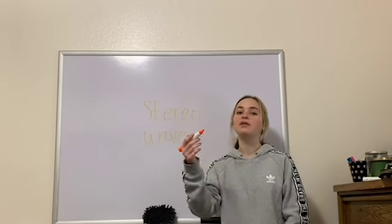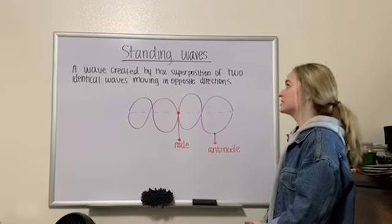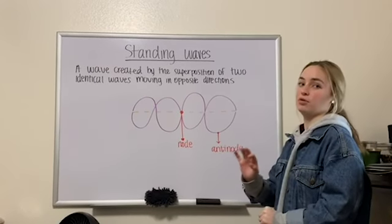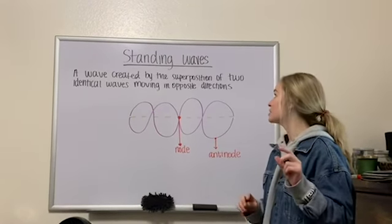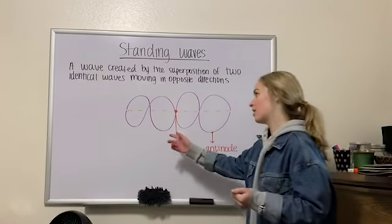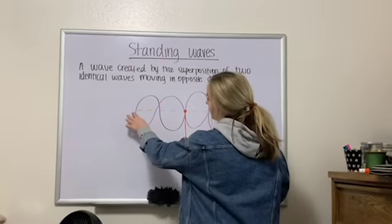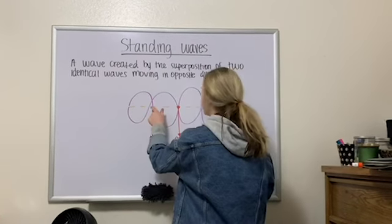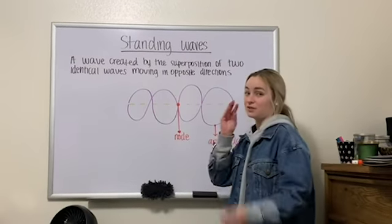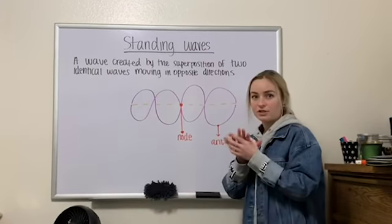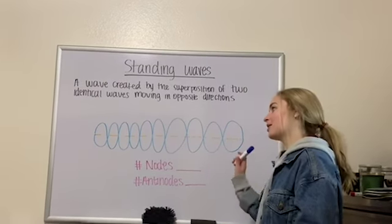Another example of constructive and destructive interference is the standing wave. A standing wave is created by the superposition of two identical waves moving in opposite directions. The oscillations are at fixed points in space. Where the waves meet at the equilibrium point is called a node — that is where the wave disturbance is collectively zero. Where there is an anti-node, the wave disturbance is at its maximum.